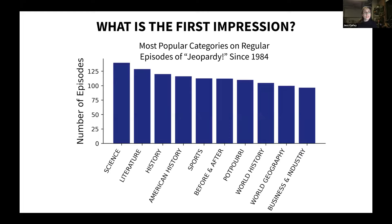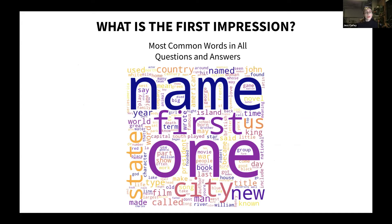But if I want to know specifically what is meant by, for example, business and industry, I may want to figure out exactly what words are described in that category. There also seems to be a great deal of overlap — there's a lot of history here. So to dig deeper, I looked at the most common words in all questions and answers that appear on the show. A note: the larger the word, the more that it appeared in the data set. Without any further inspection, this isn't too helpful either. For instance, in what context is "name" a part of a Jeopardy clue?